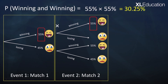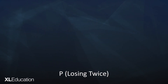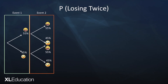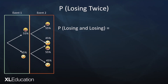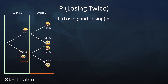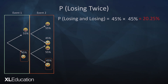So Amatle has a 30.25 percent chance of completely winning the tournament. Let's take a look at another example — what are her chances of losing twice? The probability of losing event one and then losing event two is represented by the orange line on our diagram. We multiply along that line and get a probability of 20.25 percent, so she has a 20.25 percent chance of completely losing the tournament.